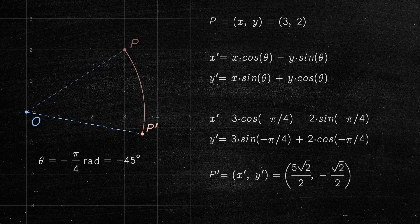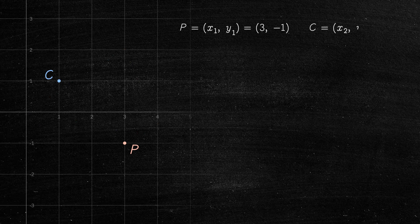Now that we know how to rotate a point around the origin, we can rotate a point P around another point C. To do this, we can use the following formula.